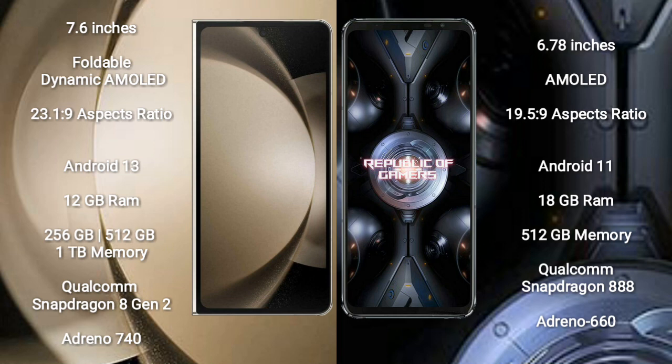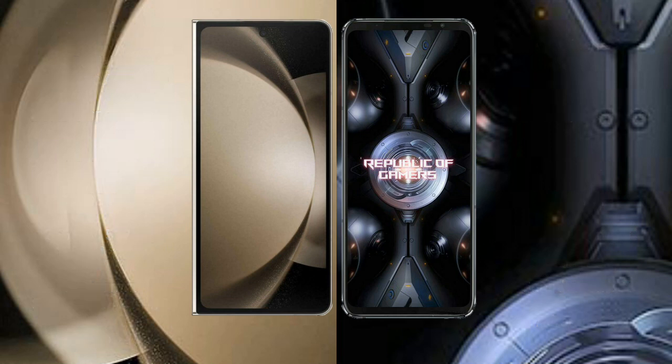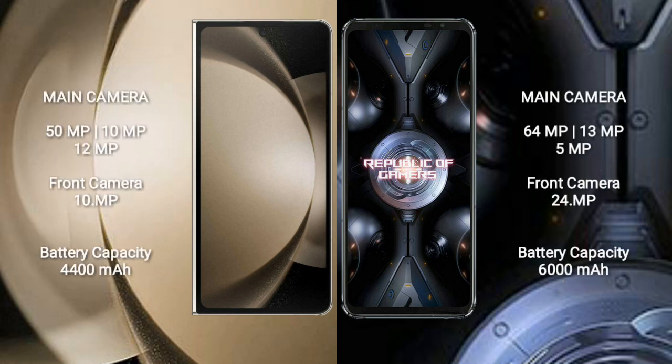Asus ROG Phone 5 Ultimate comes with 18GB RAM and 512GB internal storage, with a Qualcomm Snapdragon 888 processor and GPU Adreno 660.